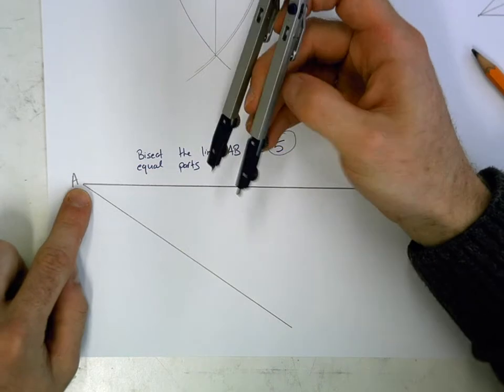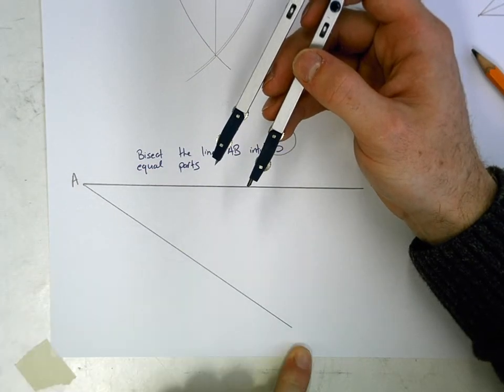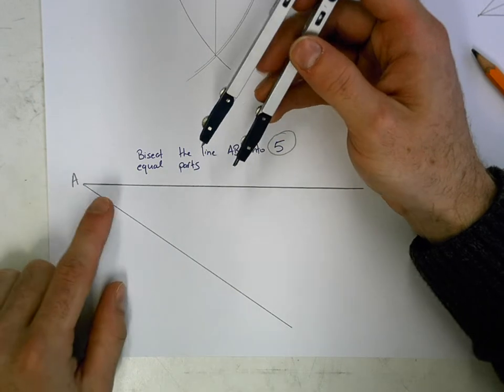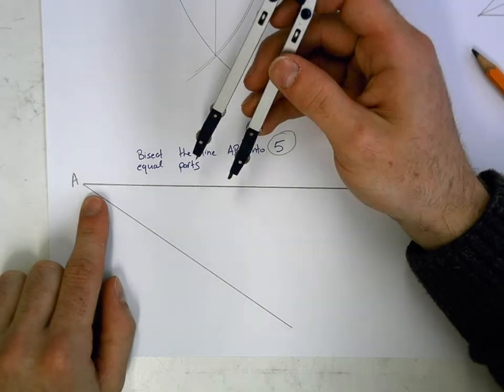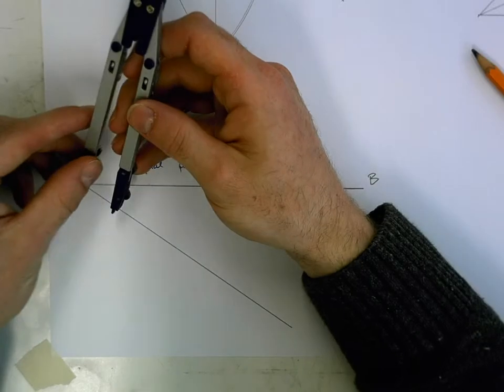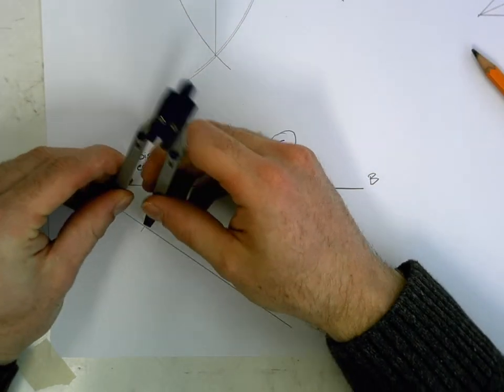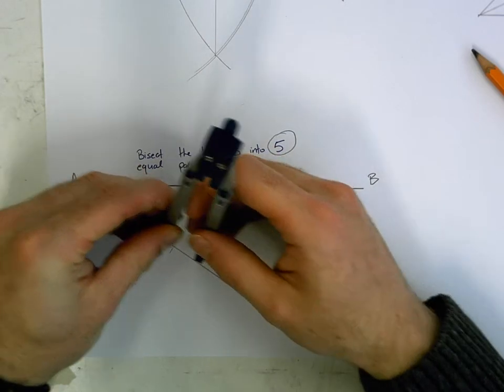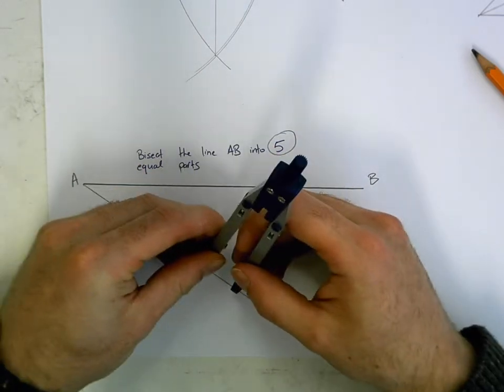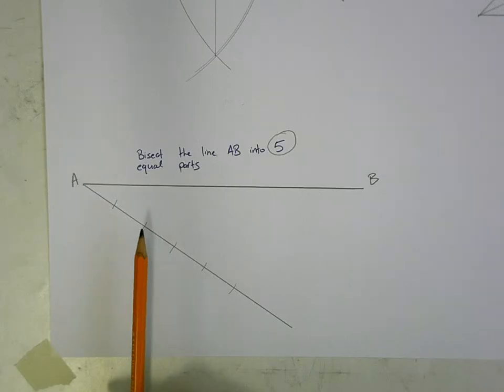We're going to take our compass and what we're going to do is we're going to mark a number of intervals along this line we've just drawn, the angle line. Now the number of intervals that we mark is dependent on the question. This is asking for five equal parts. So that means that I have to mark off five times along my angle line. And I'm marking with the compass each time. And as you can see, I have five of them done there.